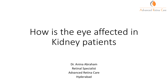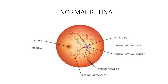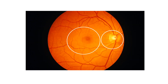How is the eye affected in kidney patients? This is a picture of the normal retina showing how the optic nerve, the central retinal artery and vein, and the macula look. In reality, this is your optic nerve and macula, and these are the blood vessels in a normal healthy retina.